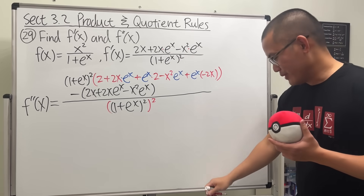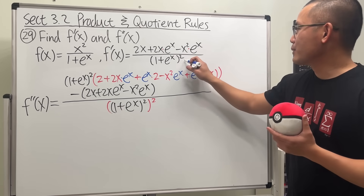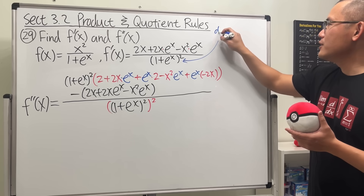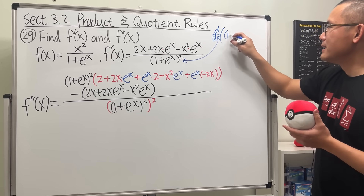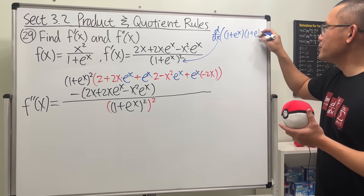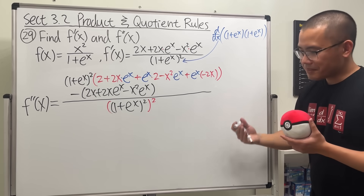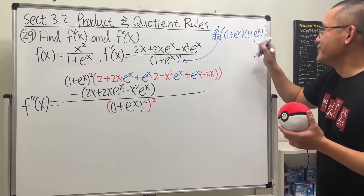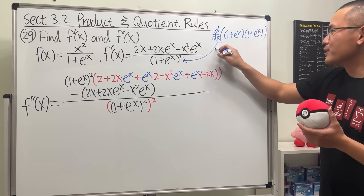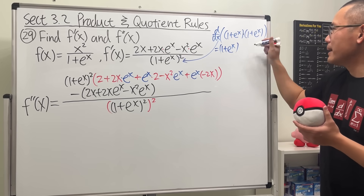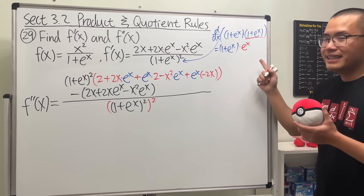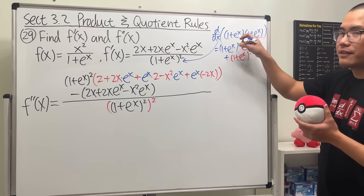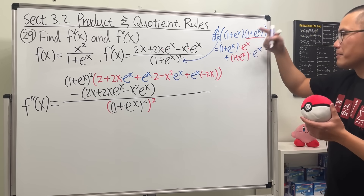We're not using the chain rule, so here's what we'll do. I'm going to write the denominator squared as (1 + eˣ)(1 + eˣ) — this is how you get around not using the chain rule. Product rule in action: keep the first function (1 + eˣ) and multiply by the derivative of the second, which is eˣ, then add the second function (1 + eˣ) multiplied by the derivative of the first, which is also eˣ.